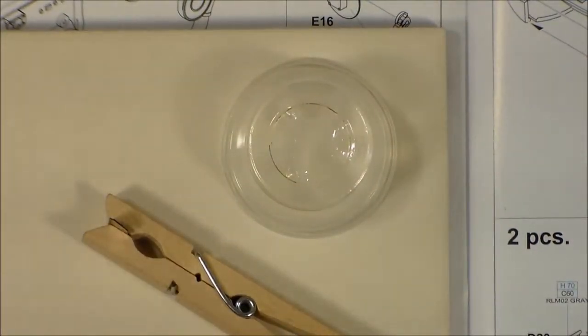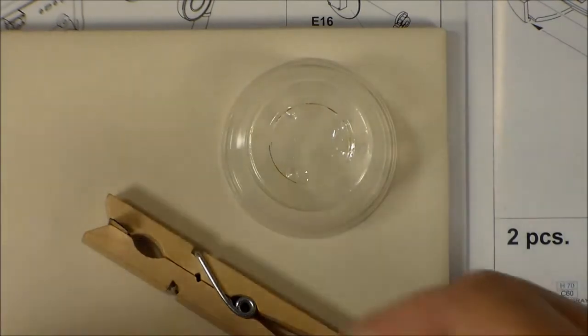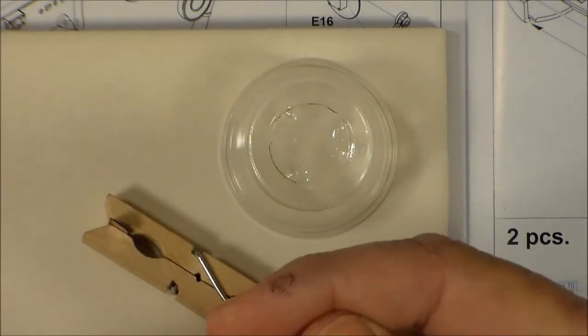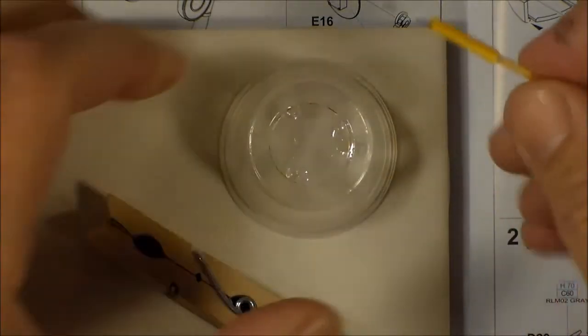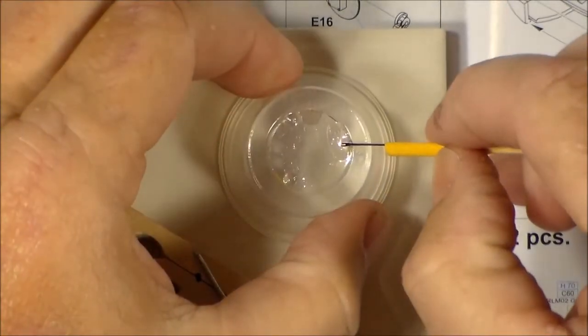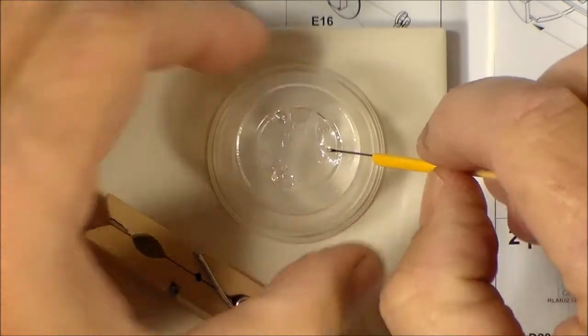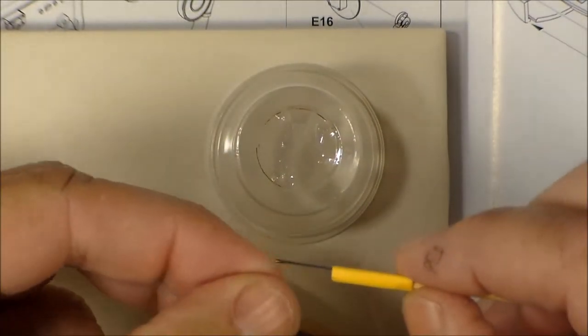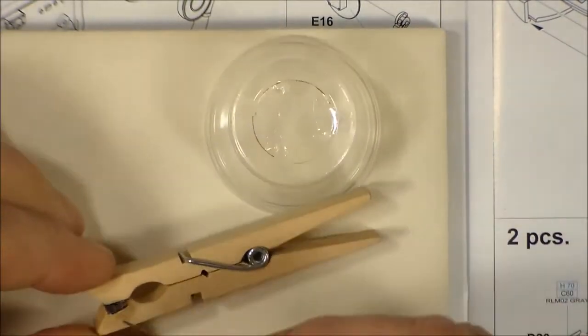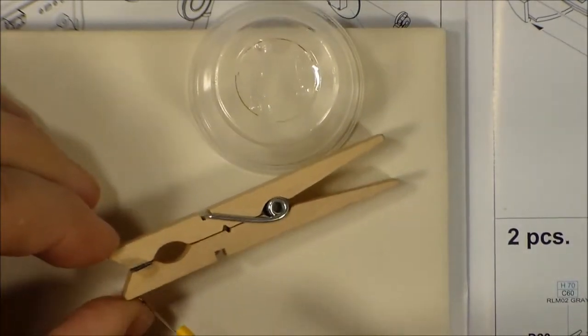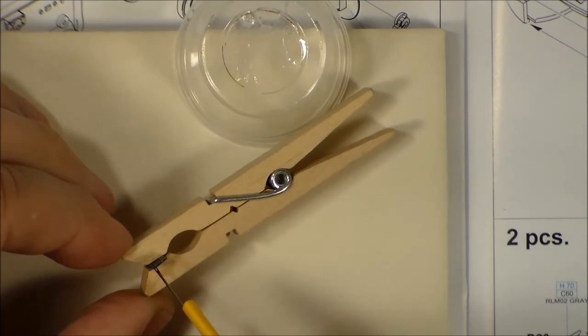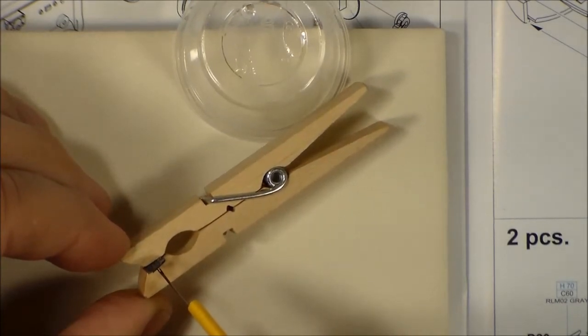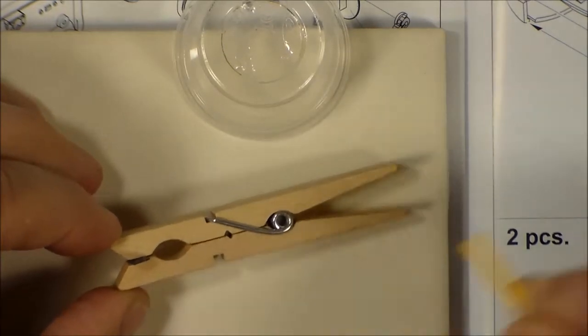Then I take my handy dandy tool here which is just a needle with the end of the loop cut off. Touch it to that and it wicks up the super glue. Then I just touch it to the edge here and capillary action will suck it down inside of that crack where the two pieces are together.